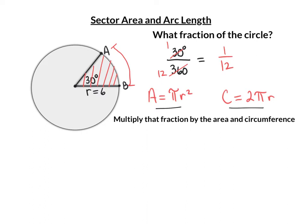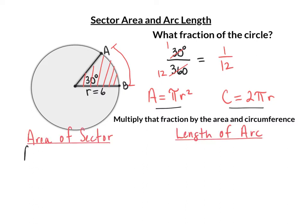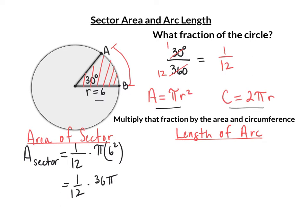The area is the number of squares inside, and the circumference is the distance around the circle. The area of the circle will be equal to one-twelfth of the circle — one-twelfth of pi times the radius squared. In this case the radius is 6, so 6 squared. This equals one-twelfth times 36 pi. Twelve goes into 36 three times, so three pi is our answer.